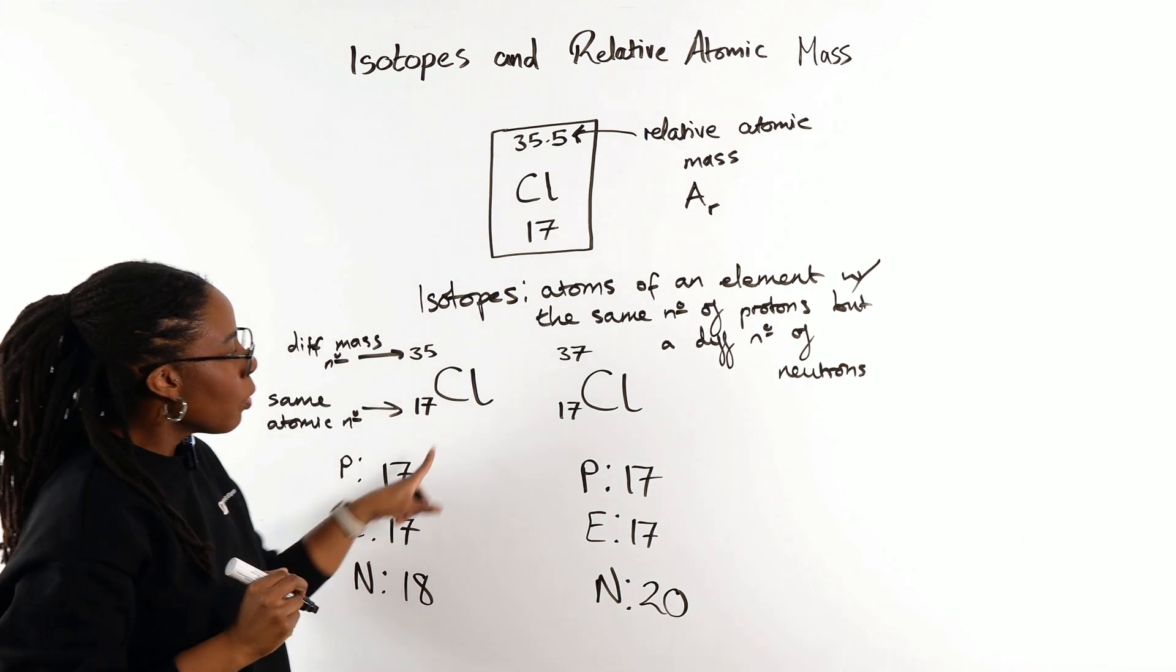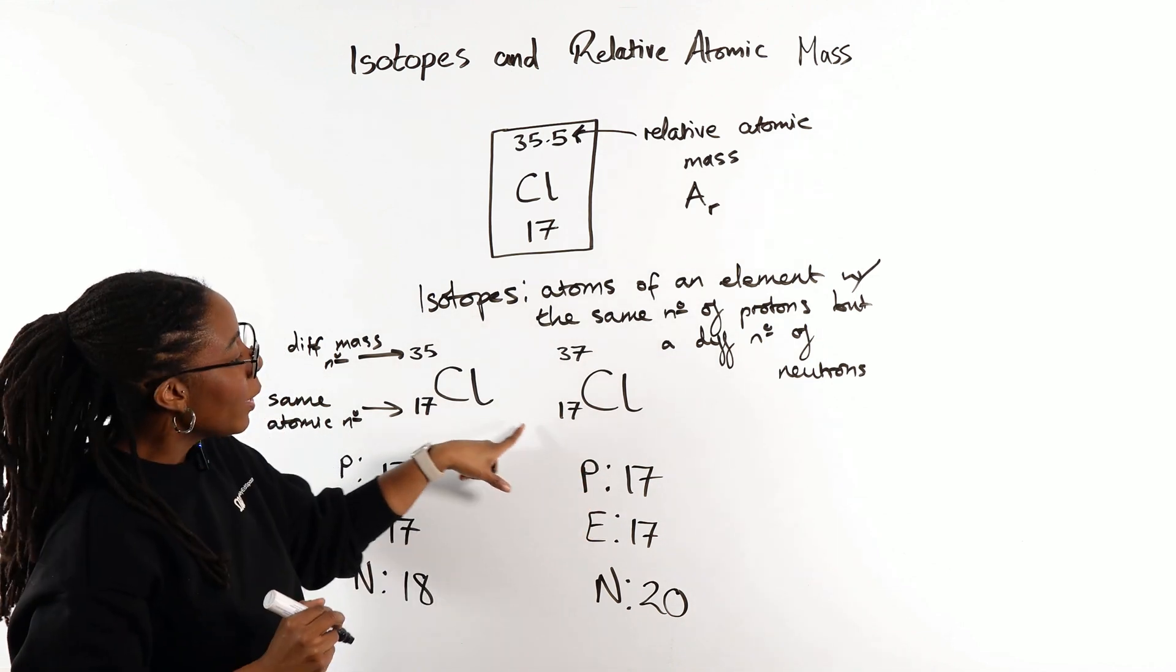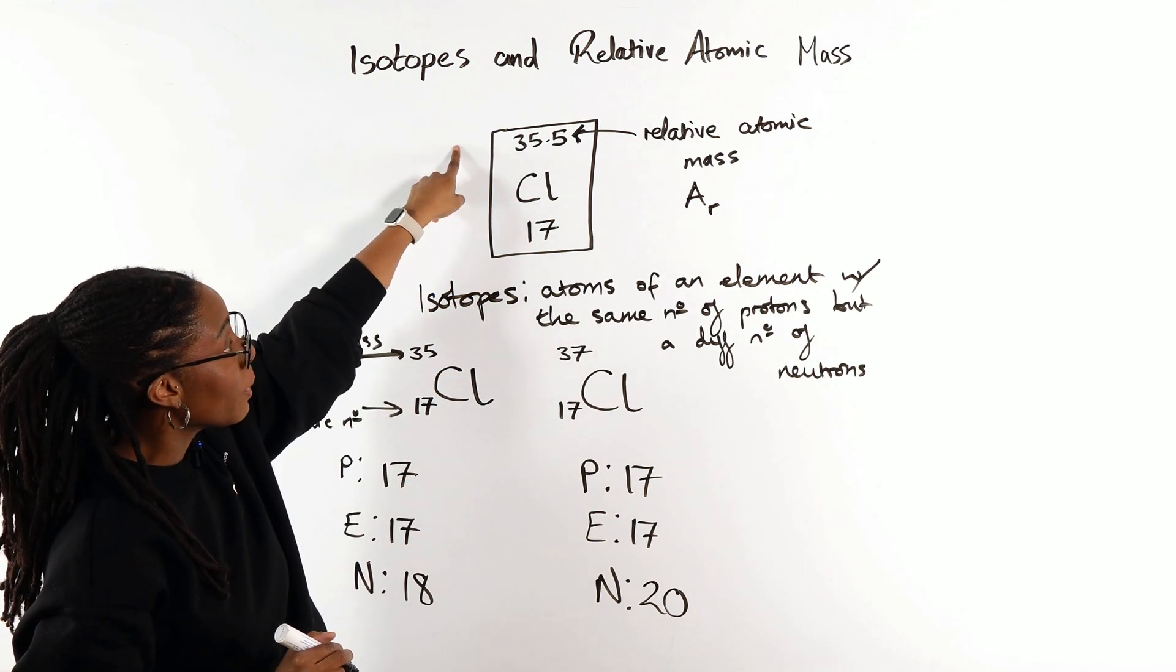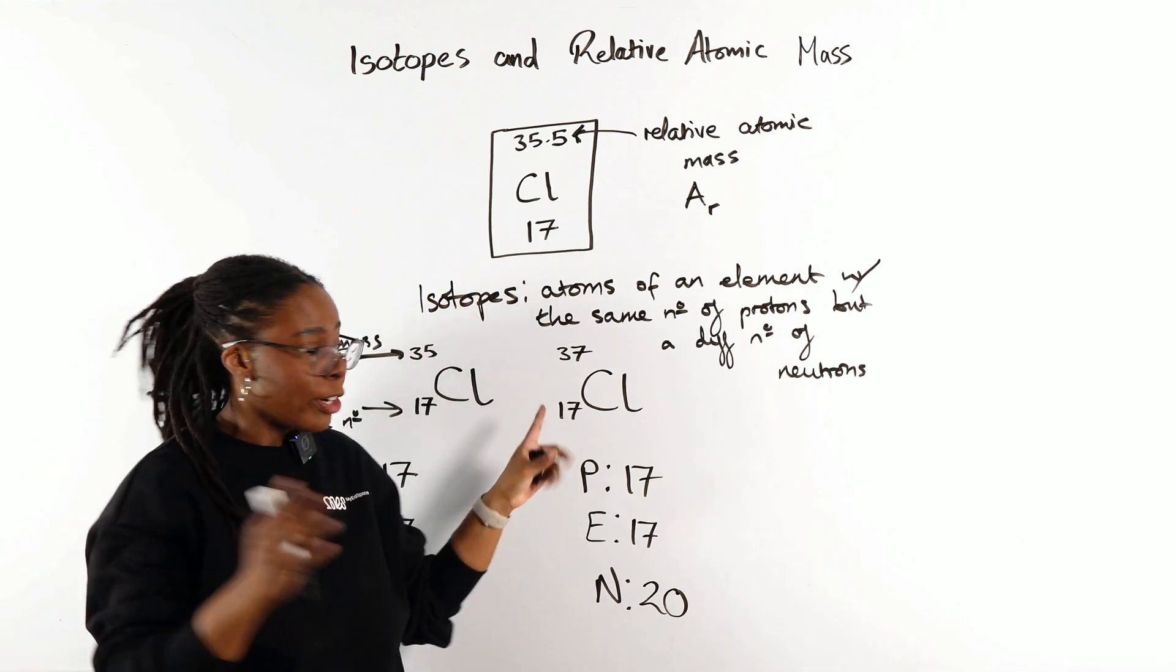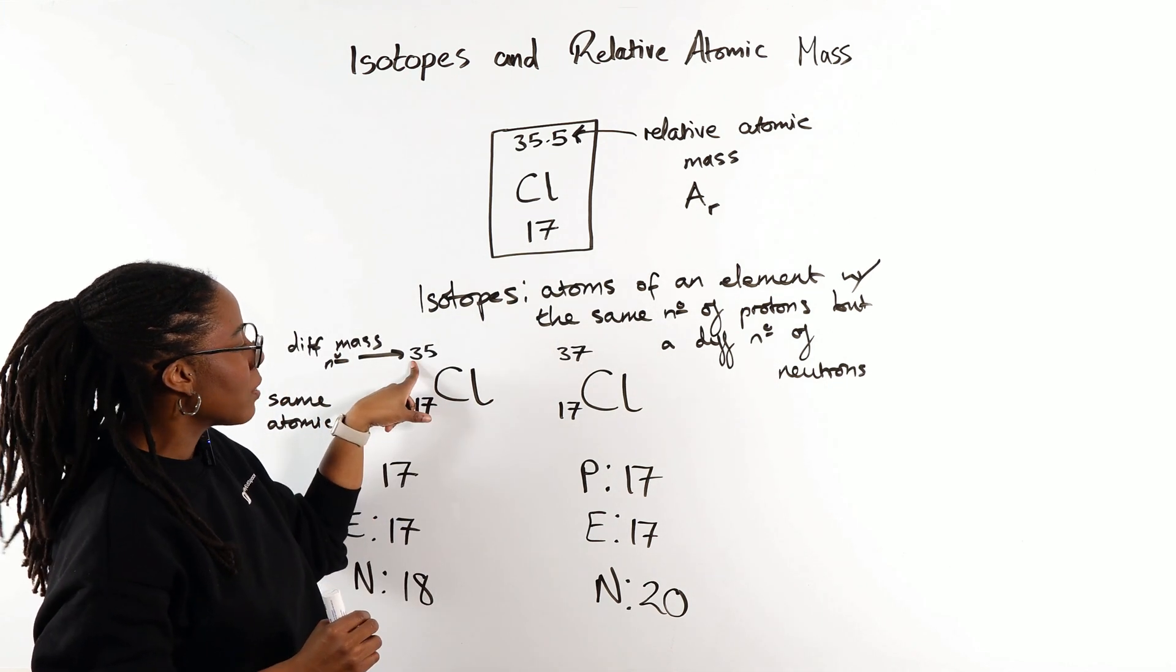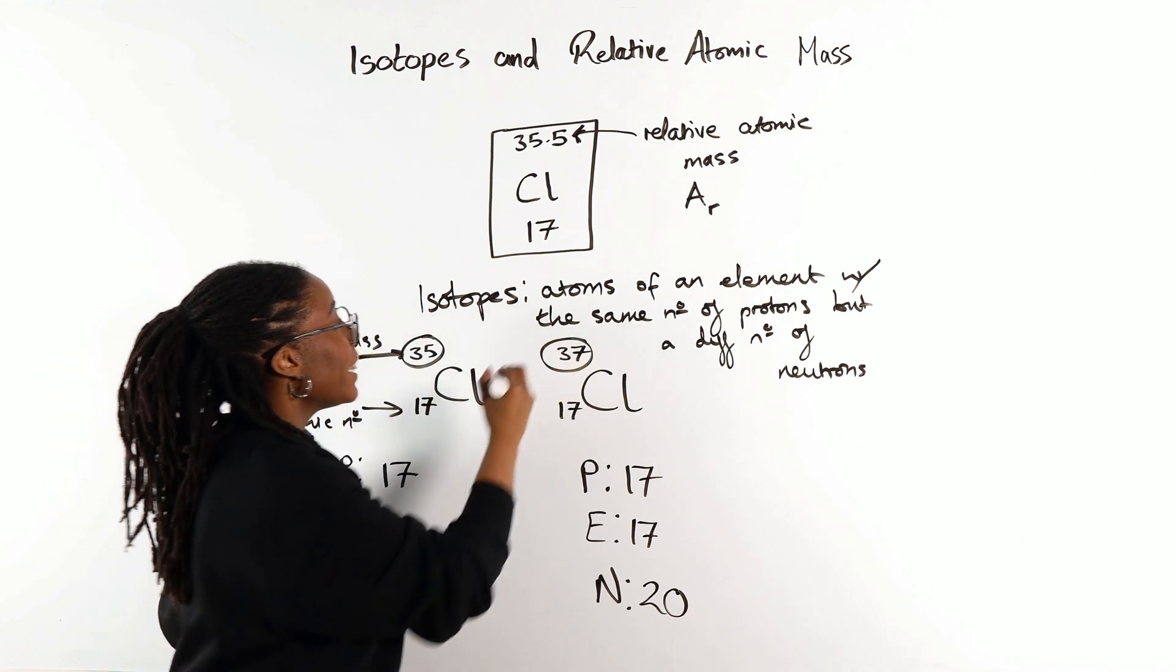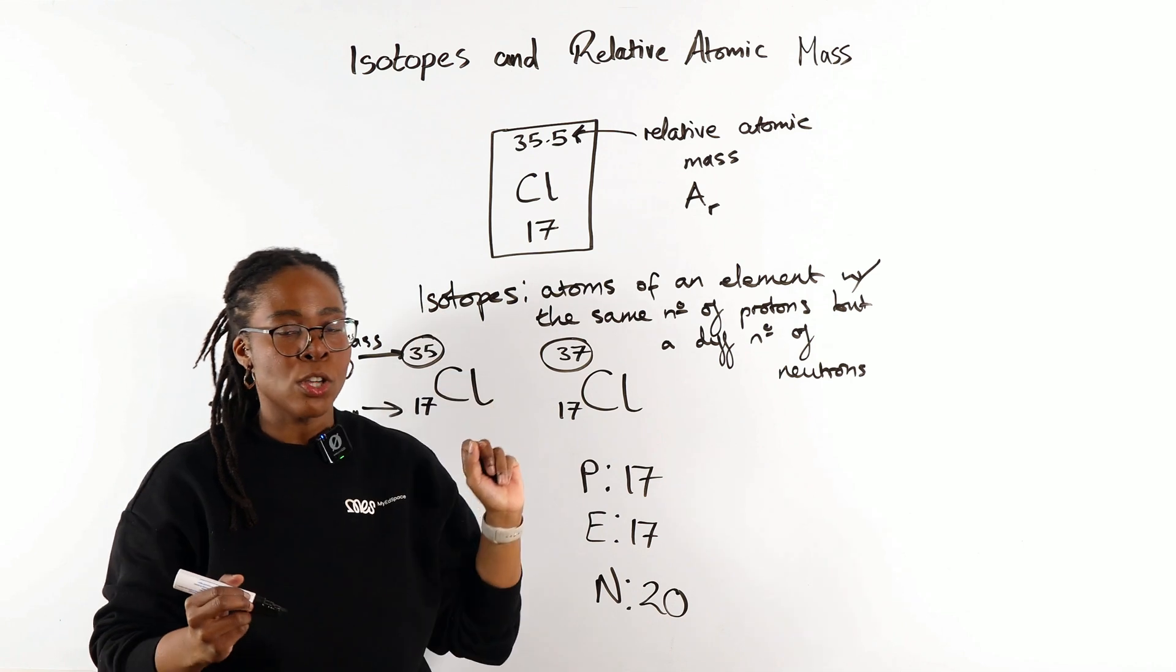So these are the individual atoms in their atomic notation. When we think about the relative atomic mass, that's actually an average of our isotopes. So we've got two isotopes, chlorine with a mass of 35, chlorine with a mass of 37, and we take the average of that to find the relative atomic mass.